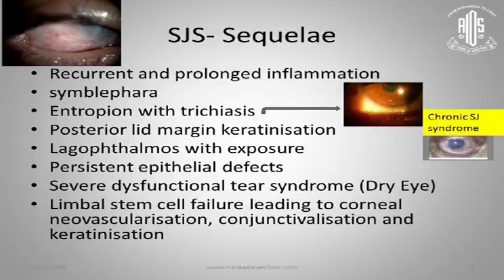The sequelae include recurrent and prolonged inflammation, symblepharon, entropion with trichiasis of the eyelashes, posterior lid margin keratinization, lagophthalmos, persistent epithelial defects, severe dysfunctional tear syndrome (DTS), and ultimately complete limbal stem cell failure leading to neovascularization, conjunctivalization, and keratinization of the cornea.